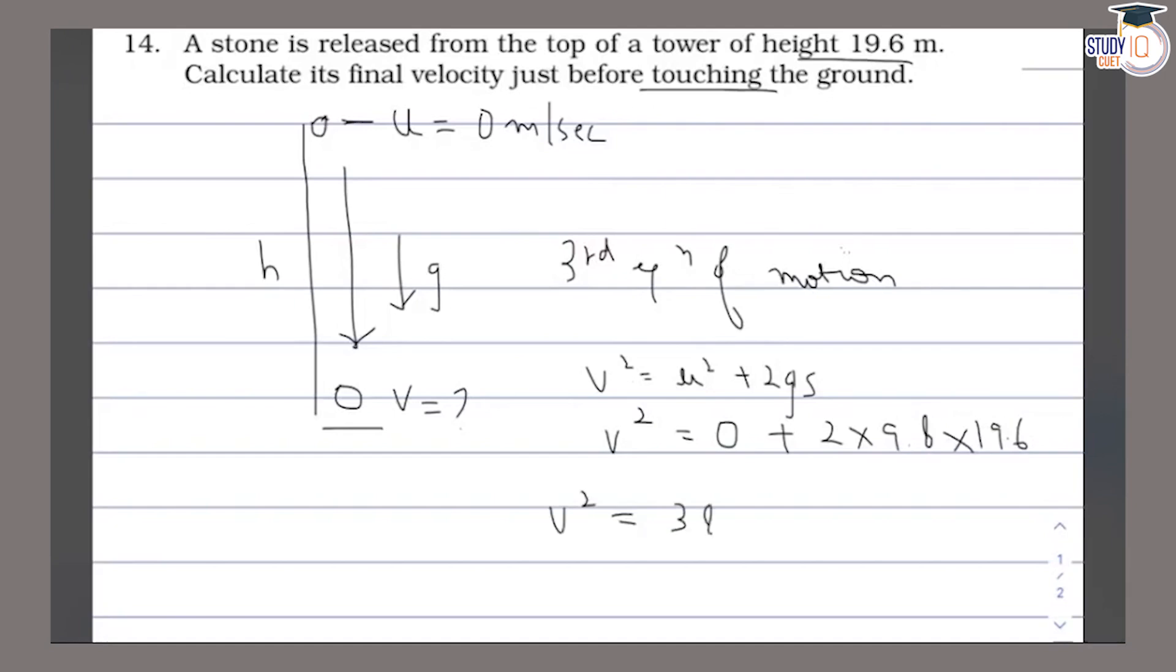Now the ball is coming down, and g is also acting downward, so g will be plus 9.8.